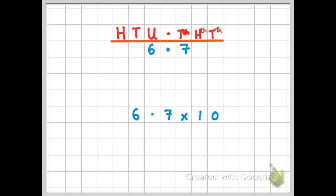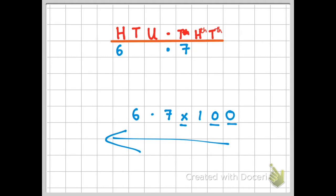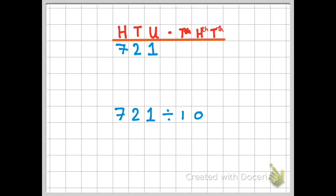Now let's multiply 6.7 by 100. There are two zeros so I'm moving two places to the left. The six moves two places — from the units to the hundreds column. The seven skips over the decimal point one place into the tens column. I have a space in the units column, so I put a zero there. The answer to 6.7 multiplied by 100 is 670.